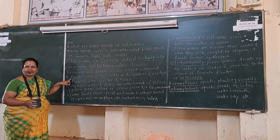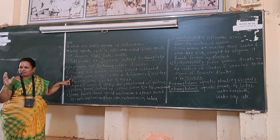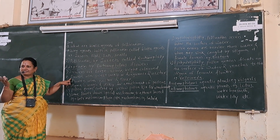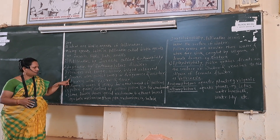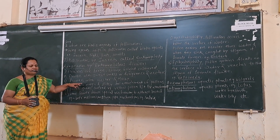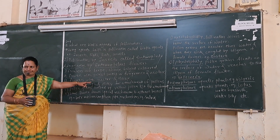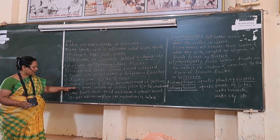Another adaptation is that flowers have a sweet smell, that is fragrance. Flowers also produce nectar and honey, which attract insects for pollination.